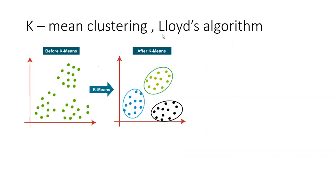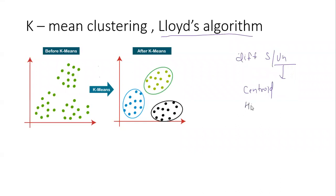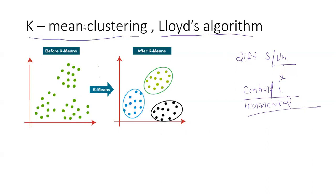Hi friends, in this video we will learn about the Lloyd Algorithm for KMeans clustering. In our last video, we learned about unsupervised learning, supervised learning, and the difference between them. There are two types of unsupervised learning: centroid-based clustering and hierarchical-based clustering. KMeans clustering is one technique for centroid-based clustering. If you haven't watched the previous video, please find the link in the description and watch it before this one.